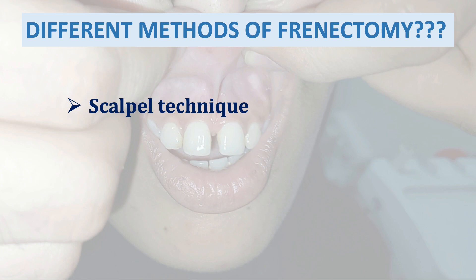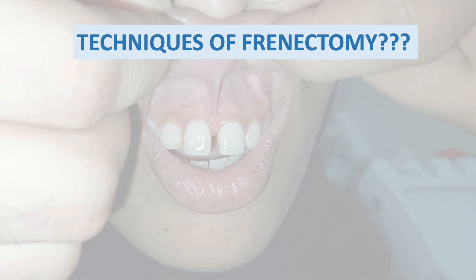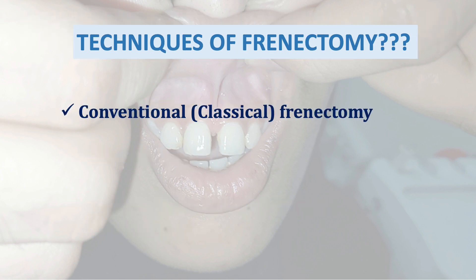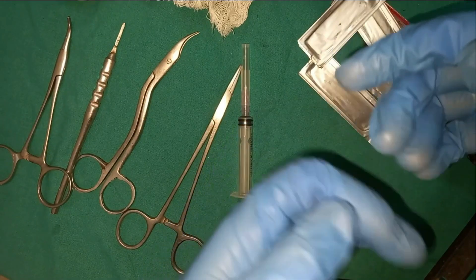There are different methods of frenectomy. We have the scalpel technique, electrosurgery, and we can use laser such as CO2 laser in lingual frenectomy. In this video we are going to discuss the scalpel technique, which I usually prefer. We also have different techniques: conventional or classic frenectomy, which most oral surgeons prefer, then the Miller technique, V-plasty, and Z-plasty.